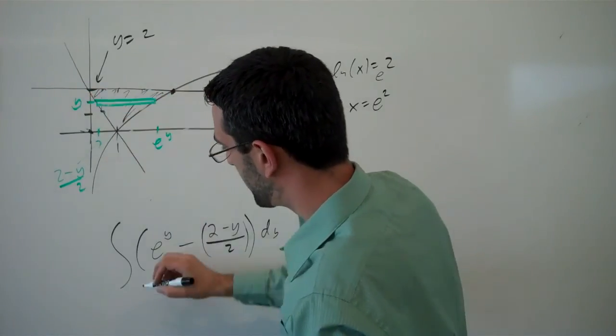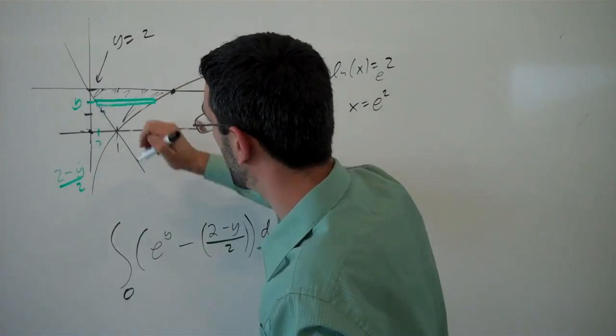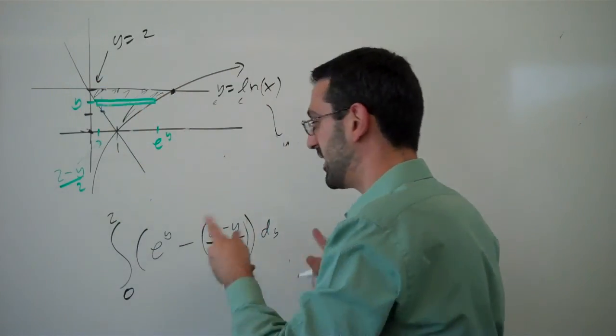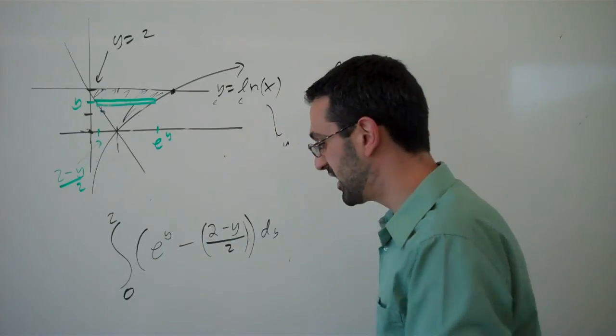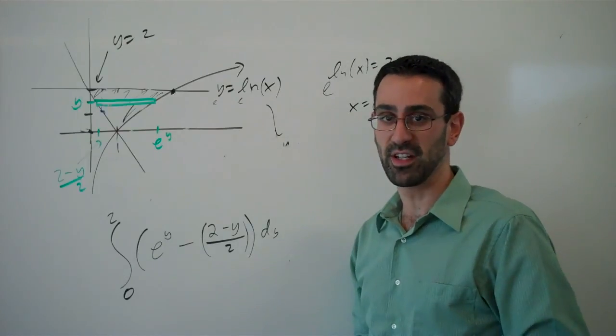So we're starting at a y value of 0. We're ending at a y value of 2. And there's the integral that we would need to do to find the area slicing horizontally. And this integral ends up being a lot easier to calculate.